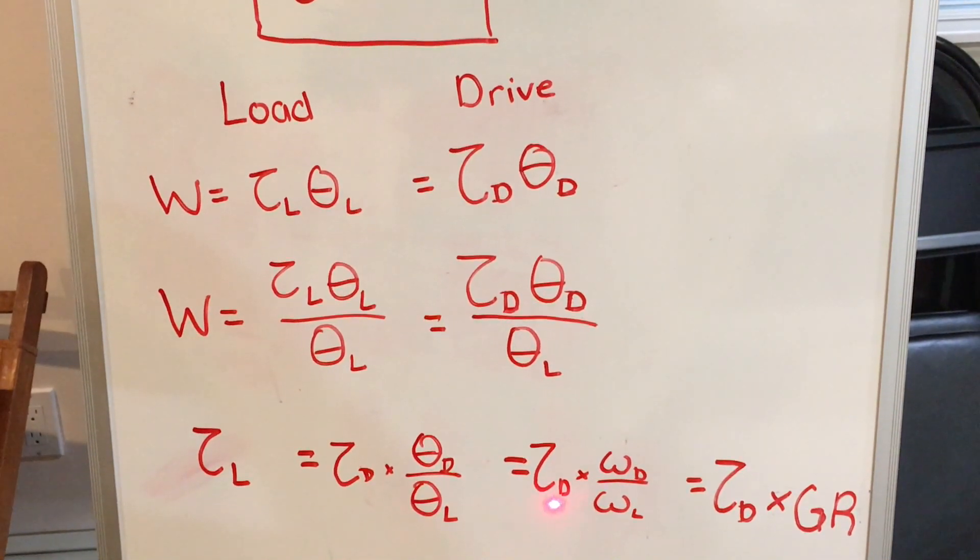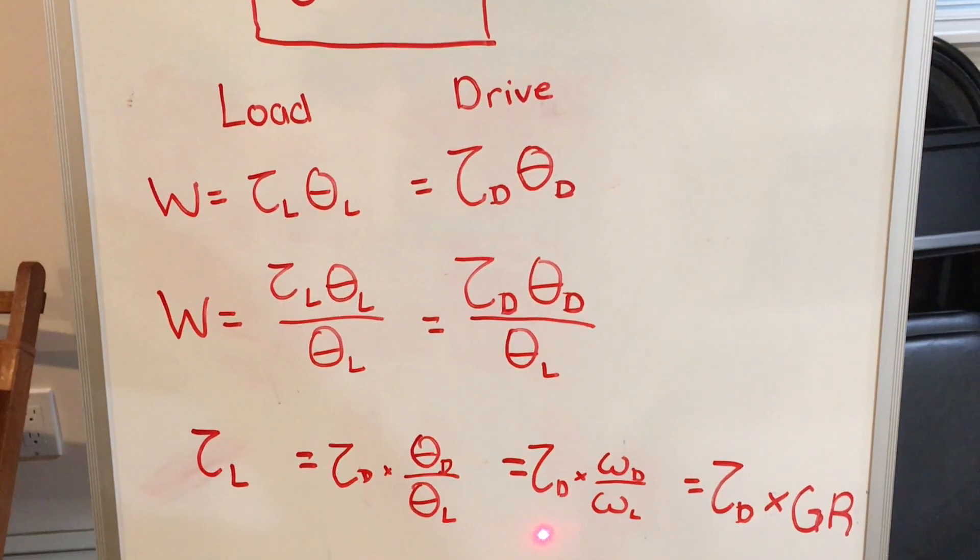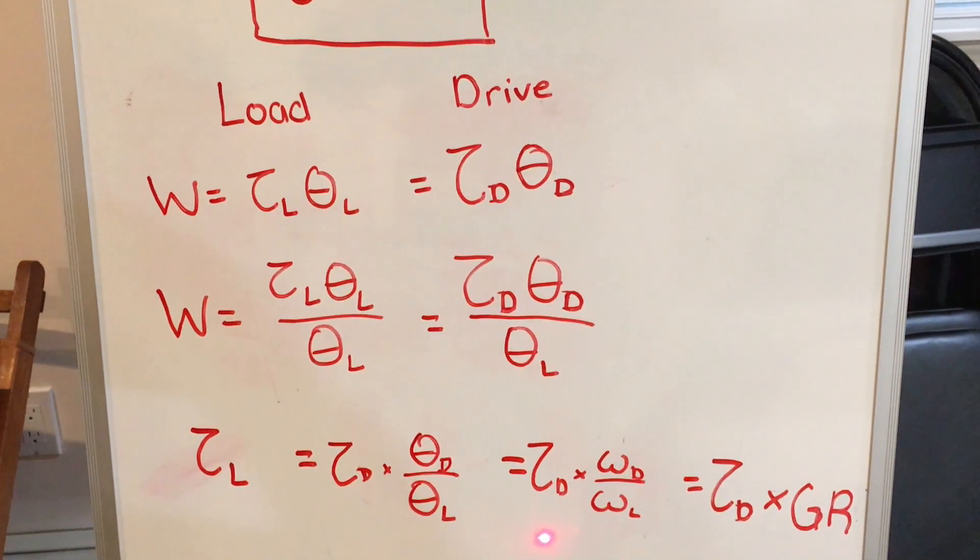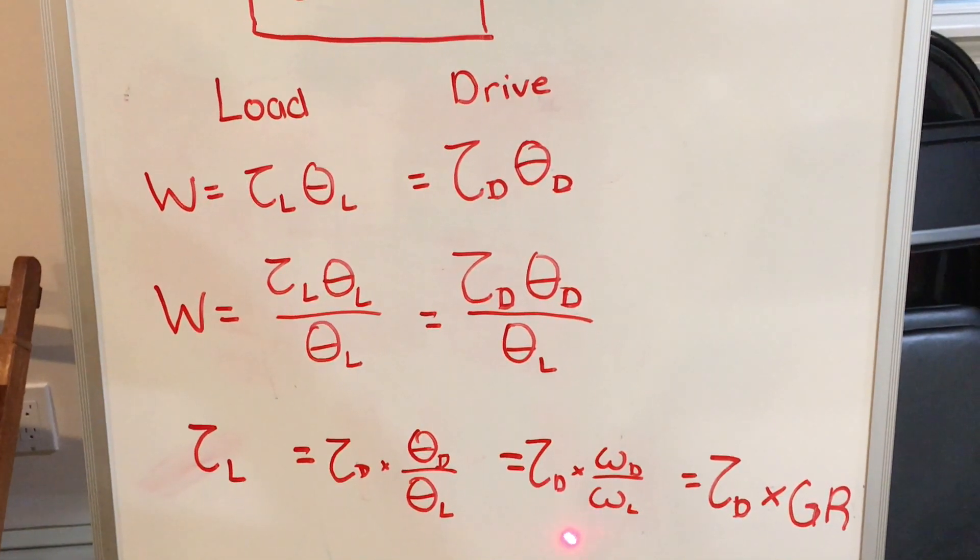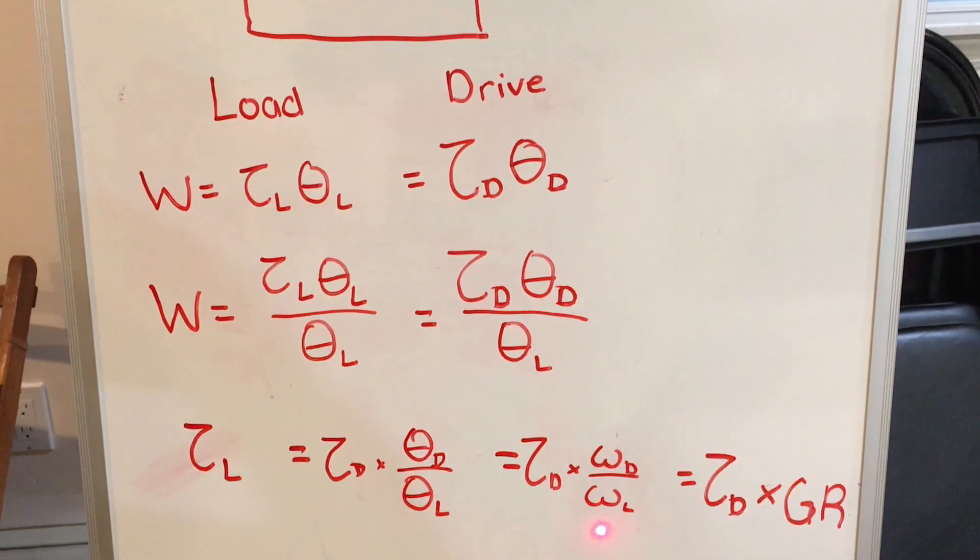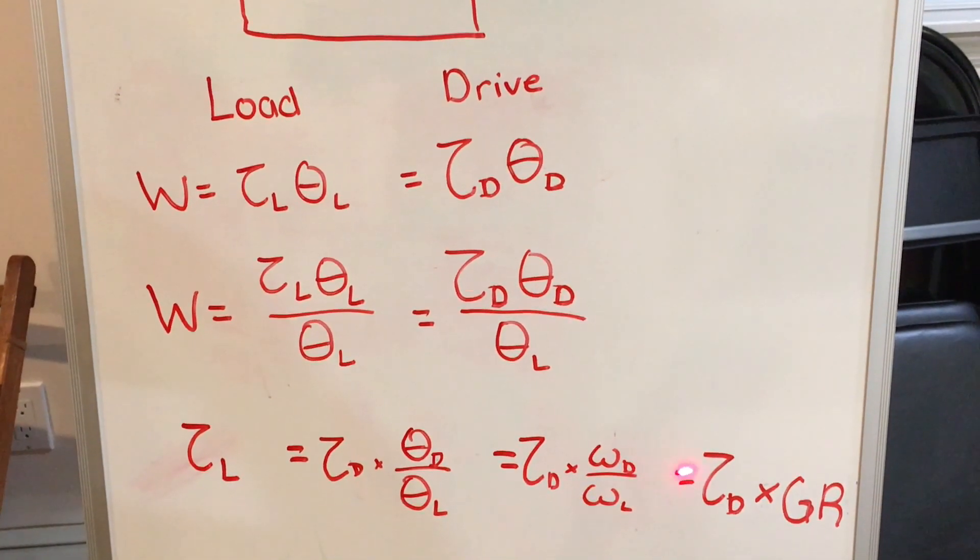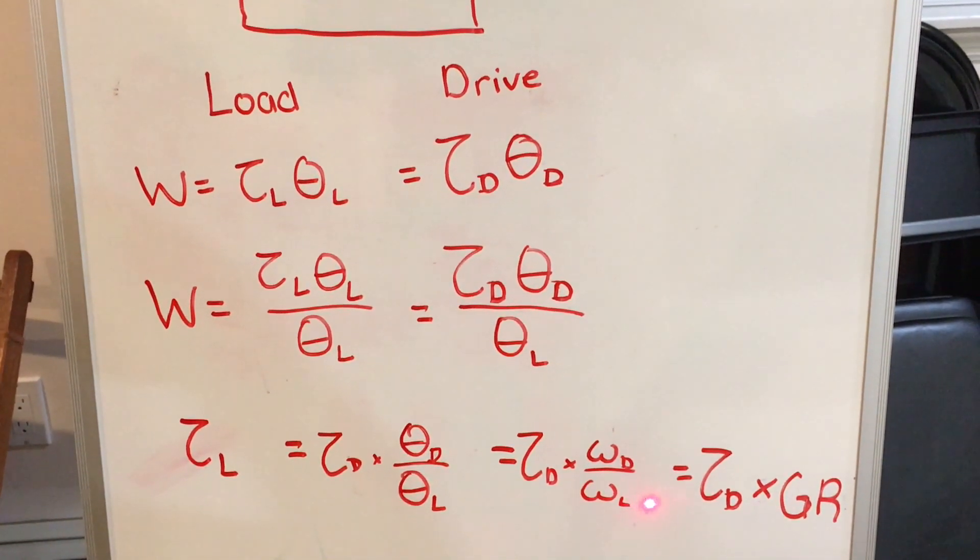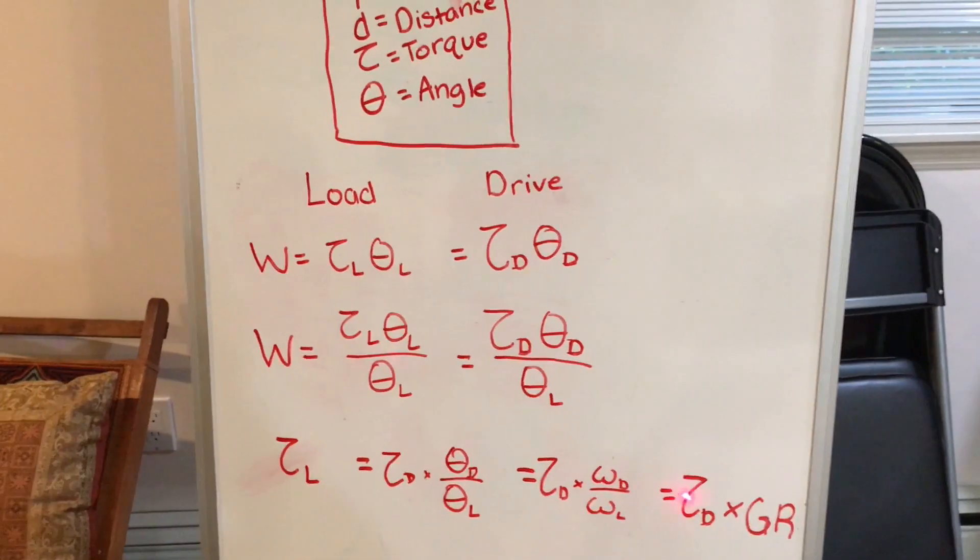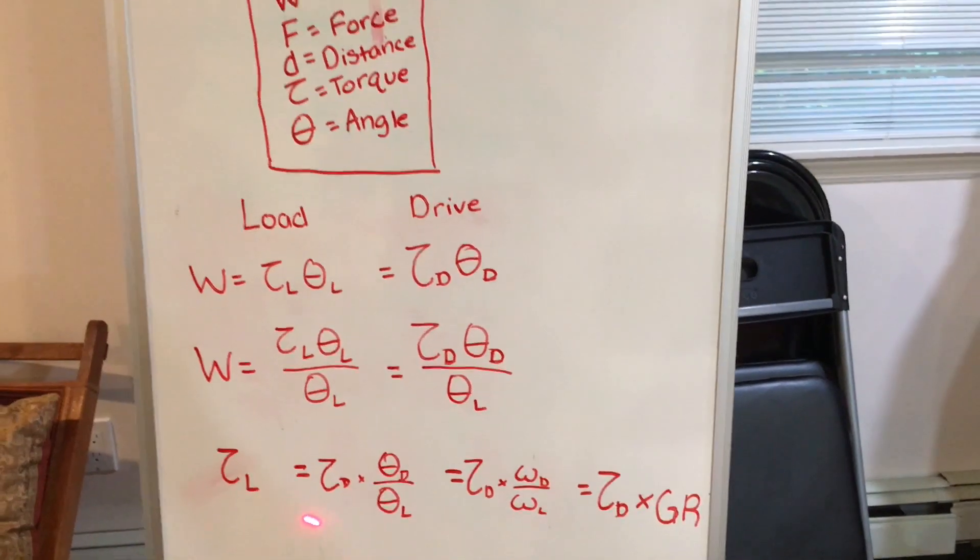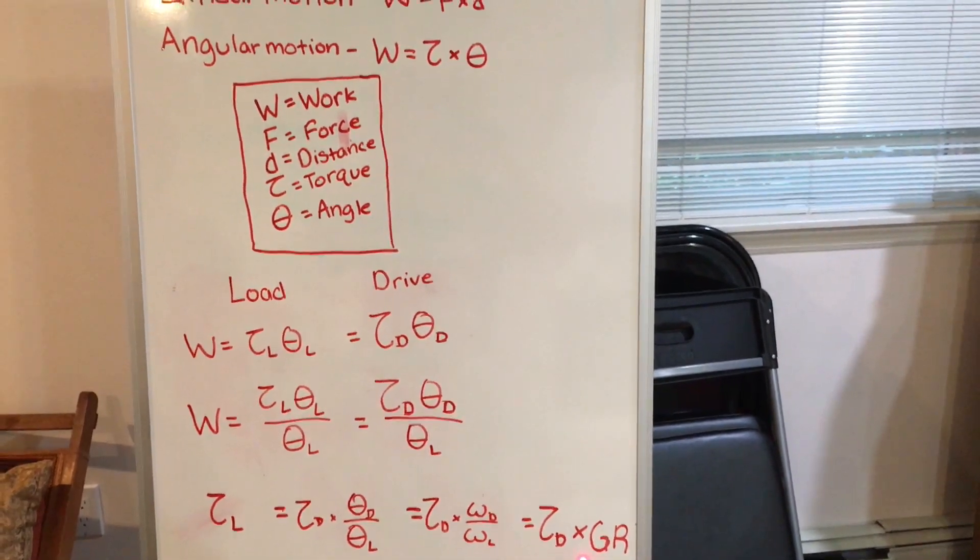Since angular velocity is the angle covered per unit time, we can assume that in a given amount of time, the ratio of the angles will be equal to the ratios of the angular velocities. Since the angular velocity of the drive axle over the angular velocity of the load axle is equal to the gear ratio, then the torque on the load side is equal to the torque of the drive side times the gear ratio.